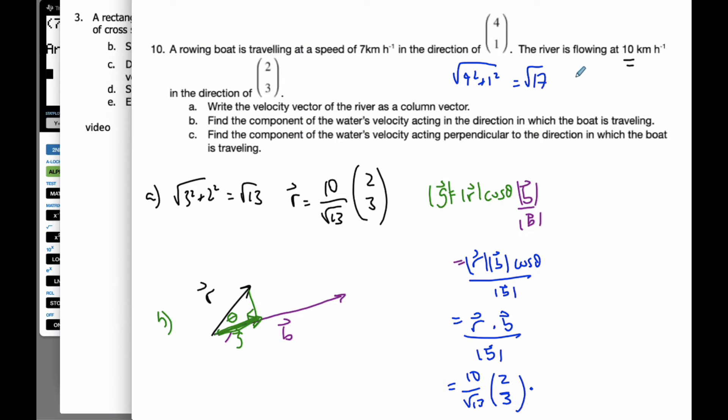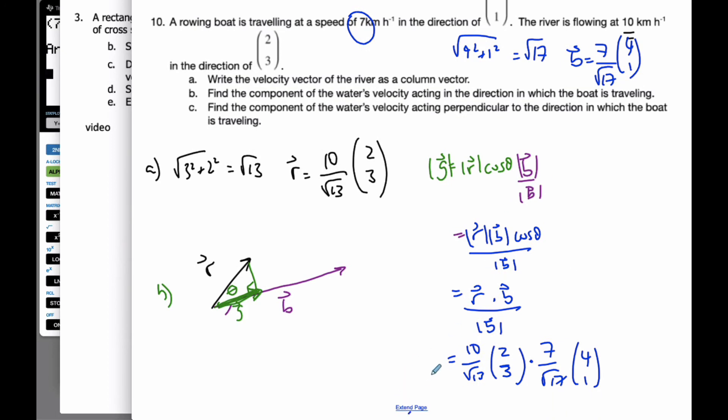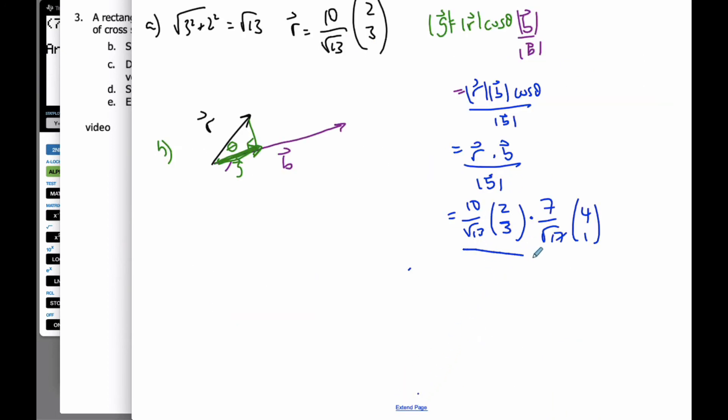And so my actual B vector is going to be (4, 1) divided by the root of 17, so now it's a length of 1, times it by 7, so now it has a length of 7. So it's 7 over square root of 17 times (4, 1) divided by the magnitude of B. The magnitude of B is 7. And so what I can do here, if I do some fancy arithmetic here, I know that I can cancel these 7s.